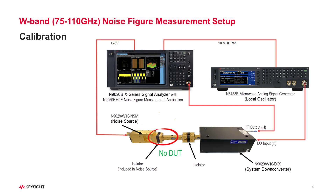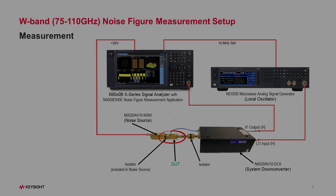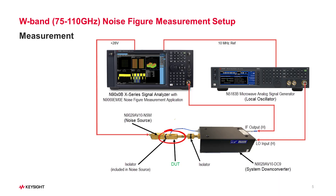To perform the calibration, connect the noise source directly to the RF input port of the System Down Converter. Calibration is done without the DUT in place to measure the noise figure contributed by the equivalent instrument.